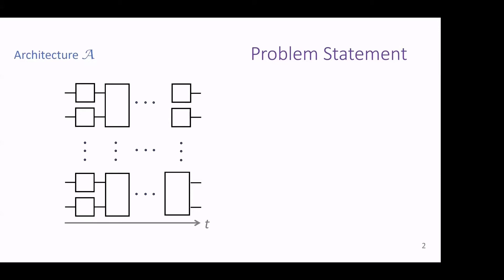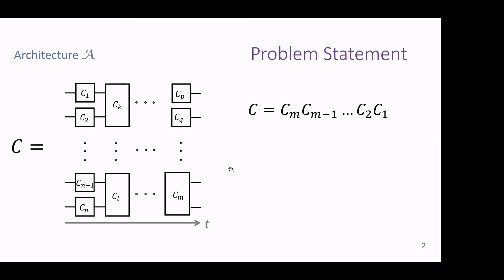To state the problem: the idea is to show that quantum computers are capable of performing certain tasks in a way that's not tractable for classical computers — it would take too long. The task could be absolutely useless, which seems to be the case with random circuits, but it would prove the skeptics wrong that quantum computers are somehow not powerful. So it's important to get this separation and show there's actually some inherent quantum power absent classically.